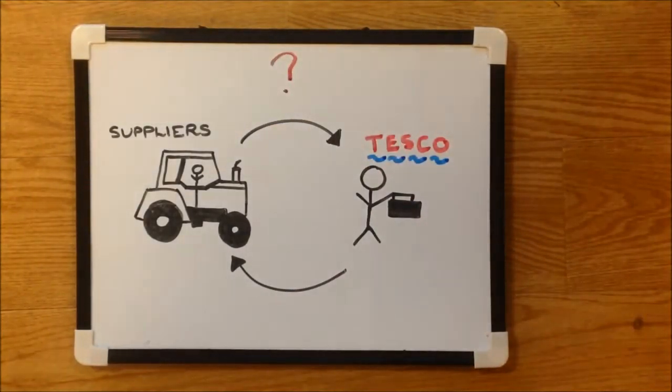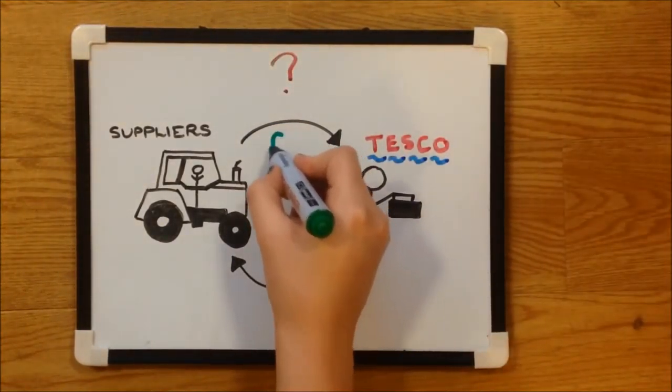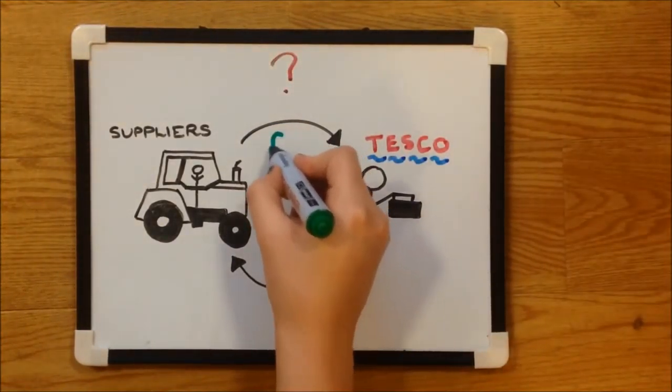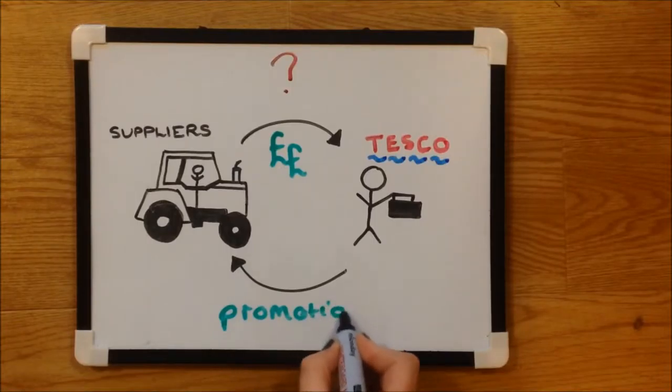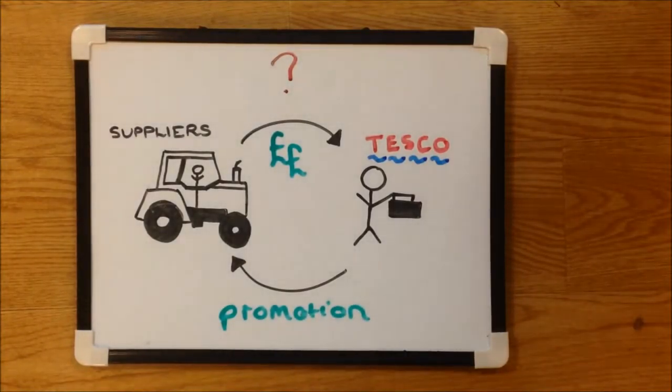Commercial income is when suppliers pay Tesco for helping to promote their products and manage their brand. The problem arose when Tesco had to estimate the value of these payments, and using their biased judgement, over-inflated the already high figures.